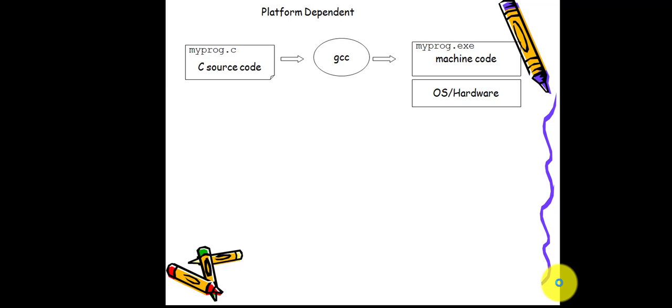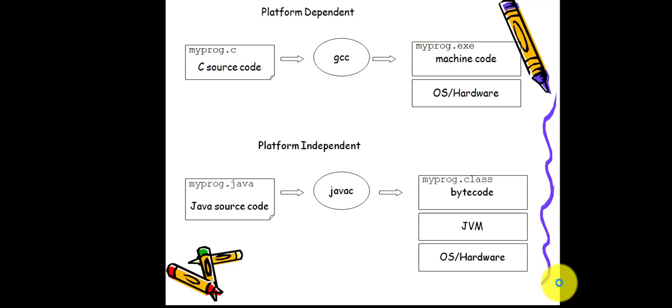This is a sample C code — when we compile it on Windows, it gives the output as an EXE executable code, also known as machine code, and it depends on the hardware and software of our system. But for platform independence, the JVM produces byte code, and using this byte code, in whatever operating system you go, it produces the output without depending on the operating system.